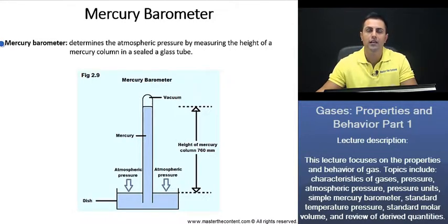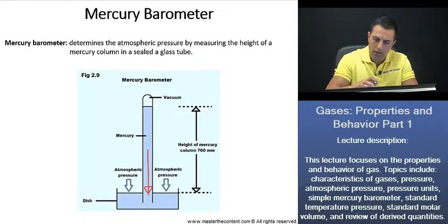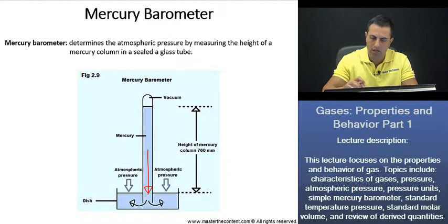Initially, we're going to have a glass tube filled with mercury to the top. And then it's going to be inverted into a dish, such as the one we see here, that's containing mercury as well. Initially, the downward pressure of the mercury inside the glass tube is going to be greater than the atmospheric pressure. Thus, mercury will flow out of the glass tube and into the dish as follows.